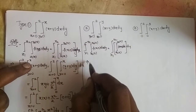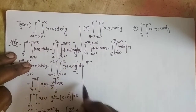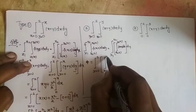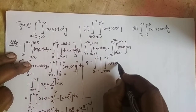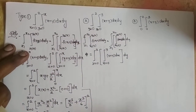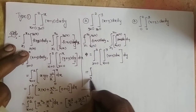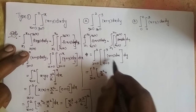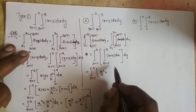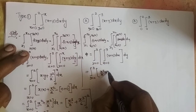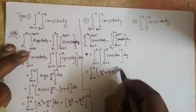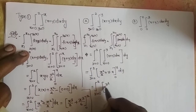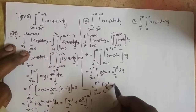Similarly, our integral can be directly written as: y = 0 to 2 as boundary, integral x = 0 to y, (x + y) dx dy. First integrate with respect to x — y should be treated as constant. So: integral of x is x²/2, and y is constant so it comes out, giving y·x evaluated 0 to y, whole dy. This gives y²/2 + y² dy.